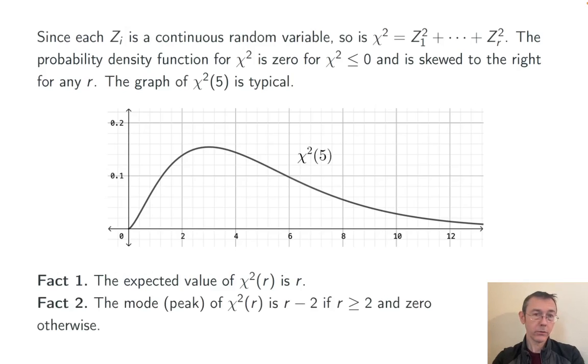Another important, though slightly less often used, fact is that the peak of the chi-squared distribution with r degrees of freedom is at r minus two, as long as r is at least two. If it's less than that, it's going to be zero.